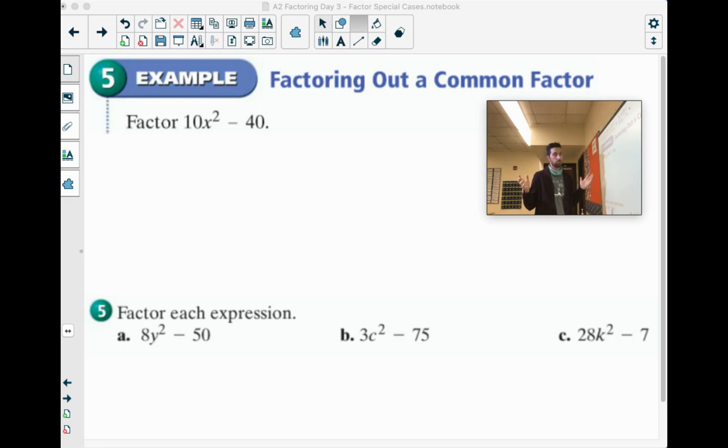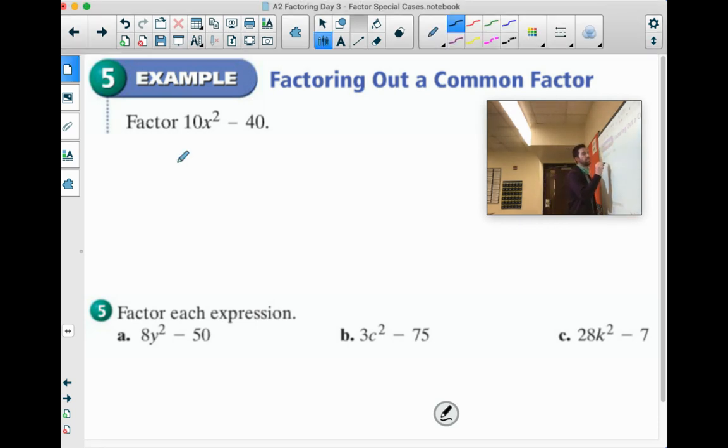Can you square root 10? No. Can you square root 40? No. But we should always look for a common factor. So 10 goes into both of these. So if I were to factor out a 10, 10 times x squared is 10x squared. 10 times negative 4 gives you negative 40.